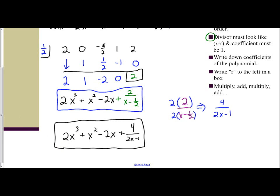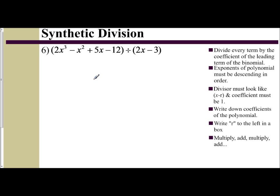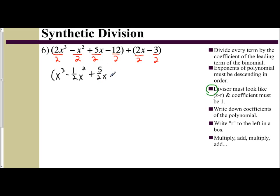So let's look at another example along these lines. We have 2x cubed minus x squared plus 5x minus 12 being divided by the binomial 2x minus 3. Again, I see I do not have a leading coefficient of 1, so I'm going to have to create it by dividing everything in the binomial by 2 and everything in the polynomial by 2. That gives me x cubed minus 1/2 x squared plus 5/2 x minus 6, divided by x minus 3/2.